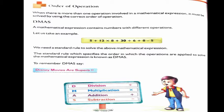A mathematical expression contains numbers with different operations. Now let us see an example. Look at the example. The yellow color box. 5 plus 12 into 8 plus 30 divided by 6 plus 8 minus 5. Look at the question.